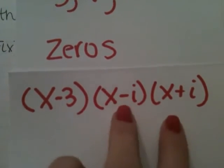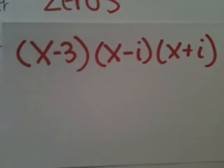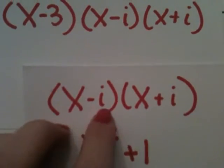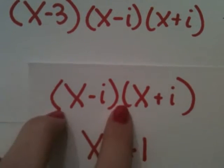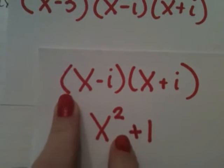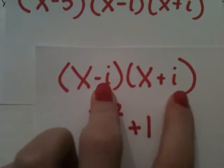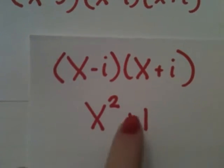I would start out by using these two. It's going to be a little easier, because these are conjugates of each other. x minus i times x plus i gives you x squared. Your middle term cancels out, because you have a negative and a positive. And a negative i times an i gives you a positive 1.